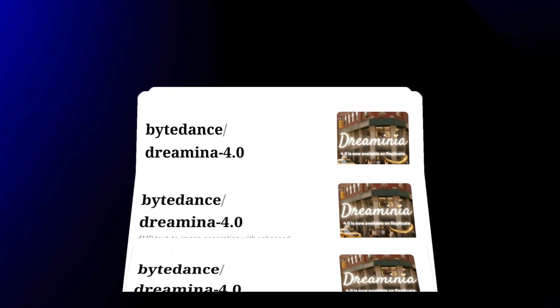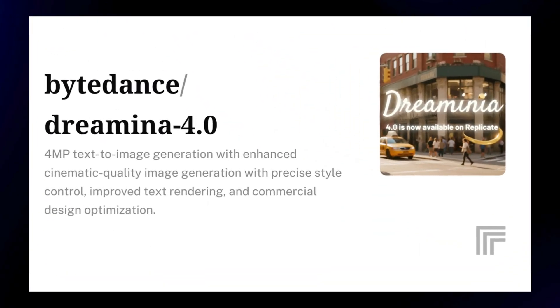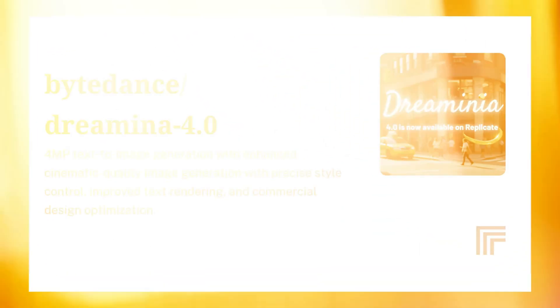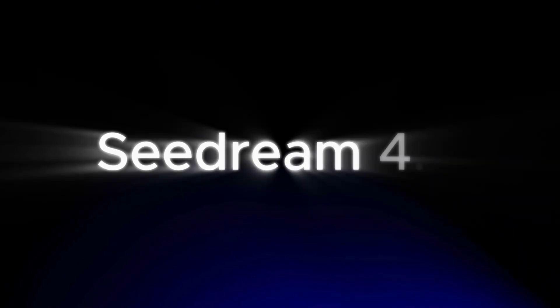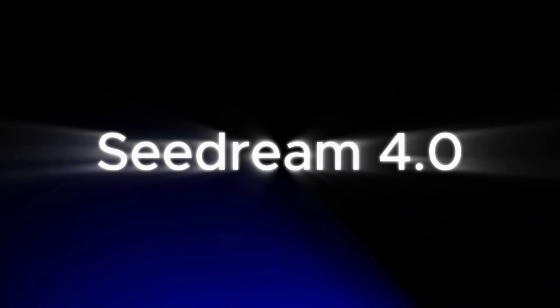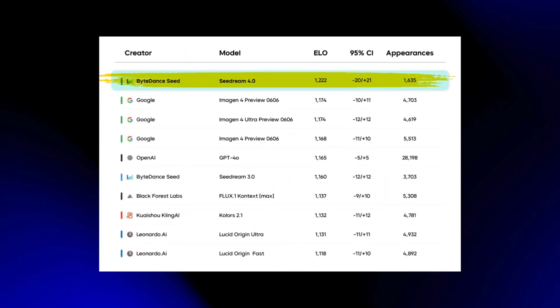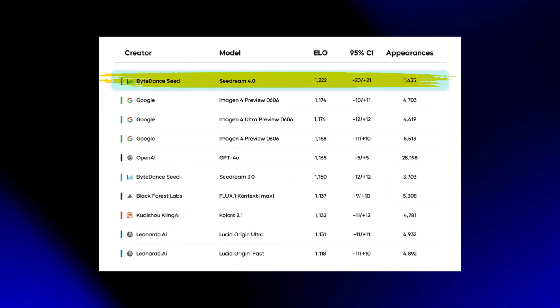Here's the kicker. Dreamina is ByteDance's own AI creative platform, powered by C-Dream 4.0 — the model that beat Nano Banana to number one on the global AI charts. It's setting a new standard for AI design.